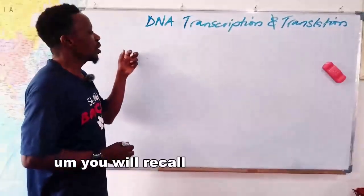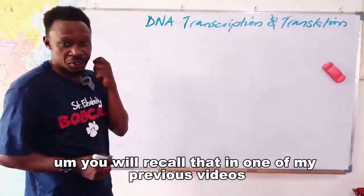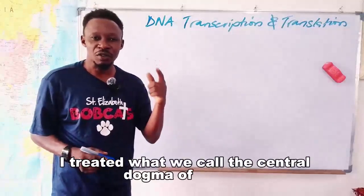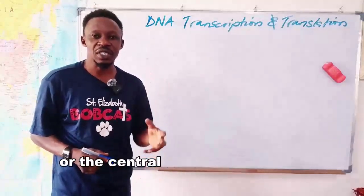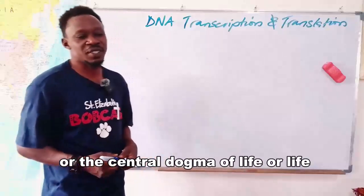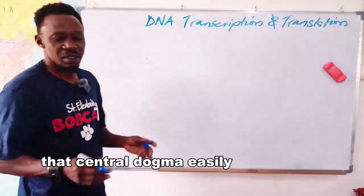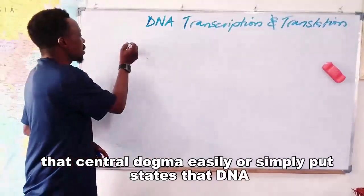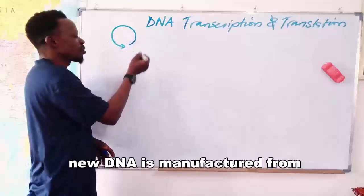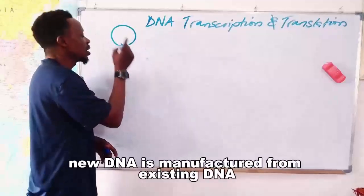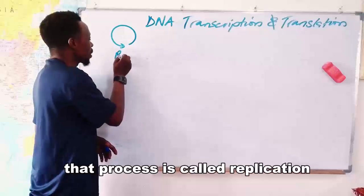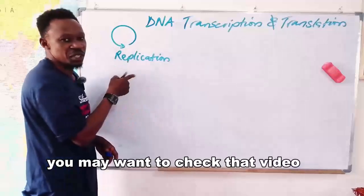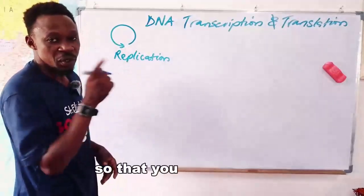You will recall that in one of my previous videos I treated what we call the central dogma of biology, or the central dogma of life or life sciences. That central dogma, simply put, states that new DNA is manufactured from existing DNA — that process is called replication. You may want to check that video on replication so that you can catch up.